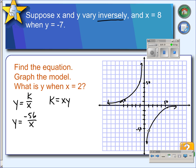Then we want to know what is y when x is 2. So, we'll just plug 2 in, and 2 goes into 56 negative 28 times, so our answer is negative 28.